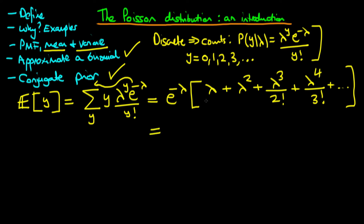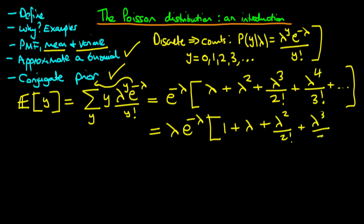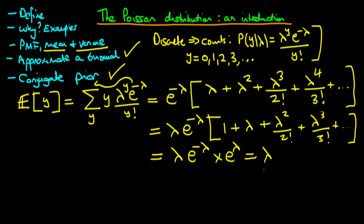We notice there is a common factor of lambda in all of this, so we take lambda out. This gives lambda times e to the power minus lambda, multiplied by the series 1 plus lambda plus lambda squared over 2 factorial plus lambda cubed over 3 factorial, continuing on forever. We recognize this series inside the parentheses as the Taylor series expansion of e to the power lambda.